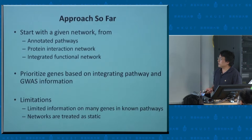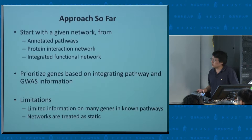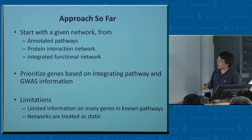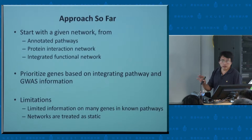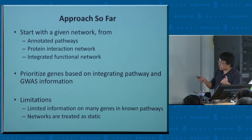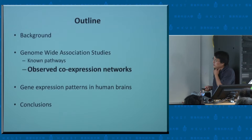As I said, this approach is pretty nice, but a question I raised earlier: a lot of these known pathways only contain a small fraction of all genes in the genome — there's limited information there and you may not be able to cover most genes in the human genome. Another thing is that the network is treated as static, whereas the network in your brain may differ from the network in your lung or gut. So we made some improvement over this first approach.